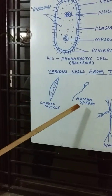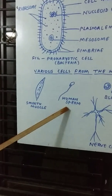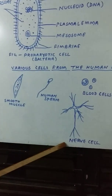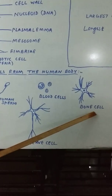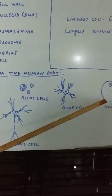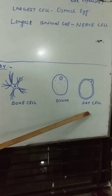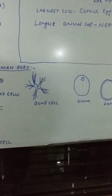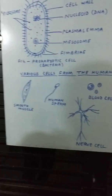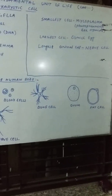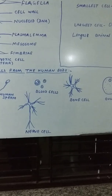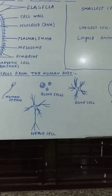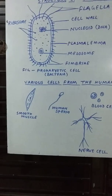It is a smooth muscle, it is a human sperm, it is a nerve cell, it is a blood cell, it is a bone cell, ovum, fat cells. On the basis of function, its structure is determined.